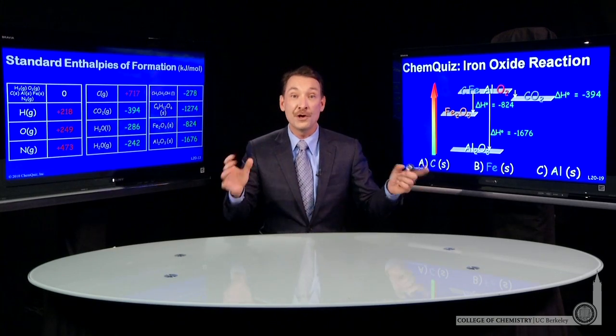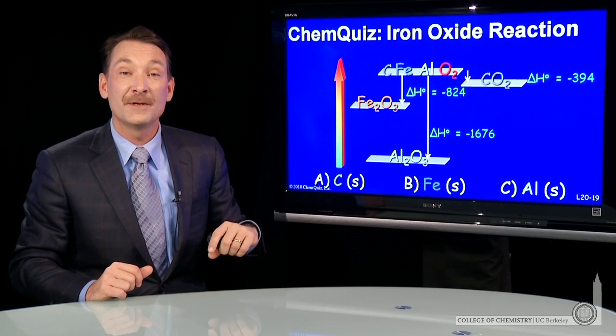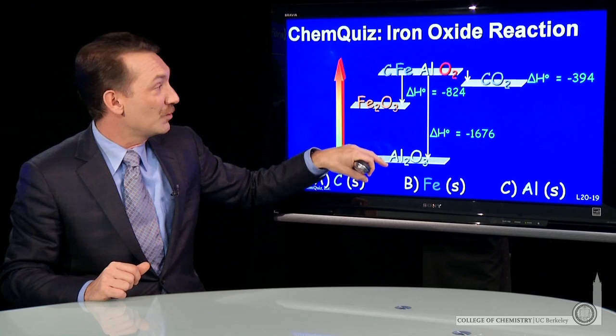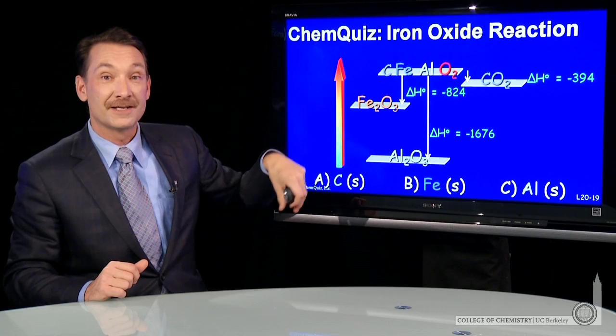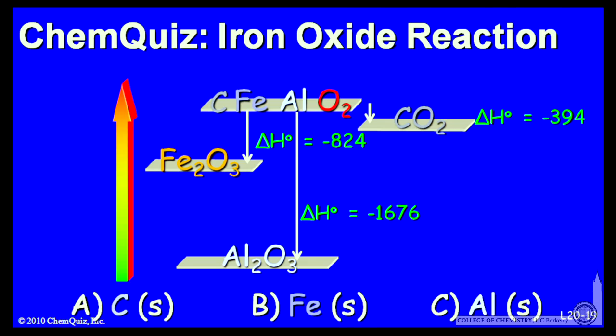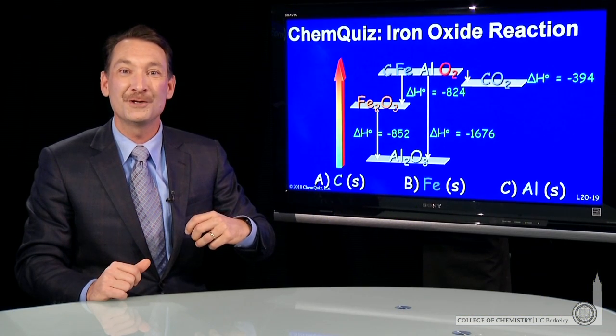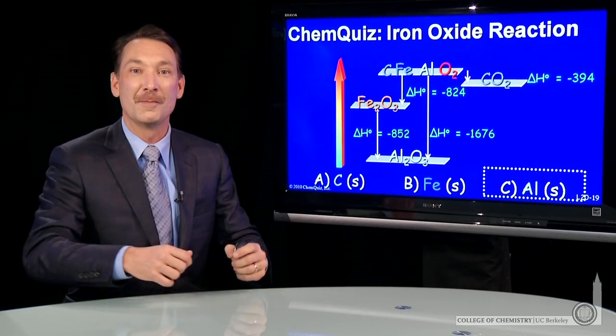So now what I have is an ordering of all three oxides with respect to the elements in their standard states on an enthalpy scale. If I convert between one and another, I can tell what the relative enthalpy change would be. Going from iron oxide reacting with aluminum to form aluminum oxide and iron metal will release 852 kilojoules. That's a tremendous amount of energy, enough to melt the iron metal that's produced and form molten iron. So the correct answer here: aluminum to form aluminum oxide.